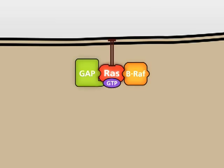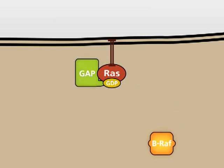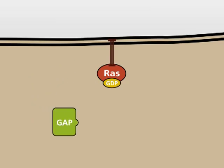The bound GTP is hydrolyzed to GDP. GDP-bound RAS is no longer active and can no longer bind to BRAF. As a result, the MAP-K signaling pathway is turned off.